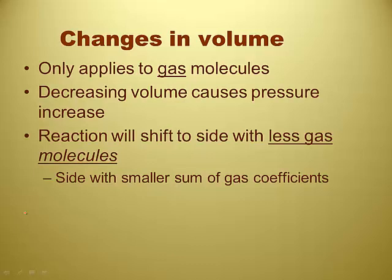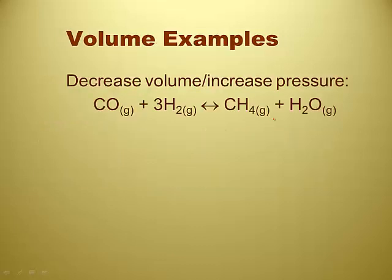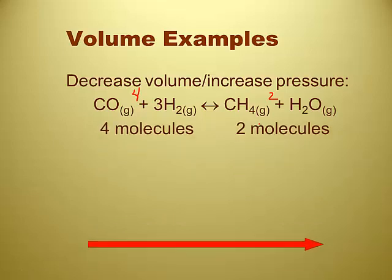Ultimately what happens is the reaction wants to shift to the side that has fewer gas molecules, because if you decrease the volume, it's got less space to be in, so it's going to want fewer gas molecules. So what you do is add up the gas molecules on both sides and figure out which side has less — that's the direction it goes. So in this homogeneous reaction, there are four gas molecules on the left — one plus three — and two on the right. Decreasing volume increases pressure and concentration, so with less space it wants to be on the side with only two moles of gas. So you shift to the right.